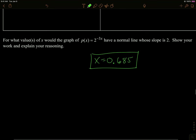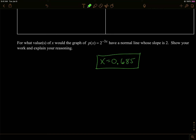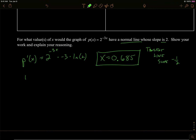Here's an application: for what values of x would the graph have a normal line whose slope is 2? Since the normal line has slope 2, that occurs at the same x value where the tangent line has slope negative one-half. Find the derivative of p — it's an exponential, so the derivative is itself, times the chain rule derivative of the inside, times the natural log of the base — then set the derivative equal to negative one-half. Put that in y1 and y2 on the calculator and find the x values where they intersect.